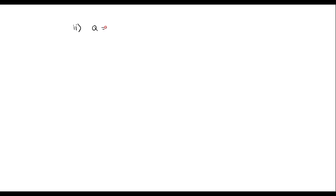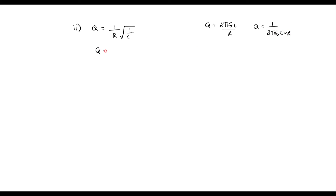Now let me calculate the quality factor. Quality factor Q is equal to 1 over R times the square root of L by C. Substituting the values: Q equals 1 over 1 times square root of 0.01 divided by 0.01 times 10 to the power minus 6. Simplifying this, we get Q equal to 1000.